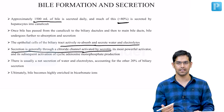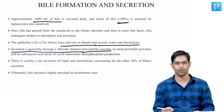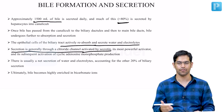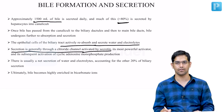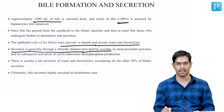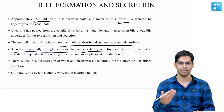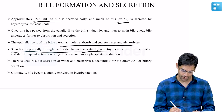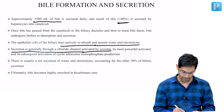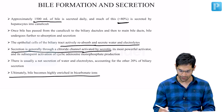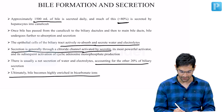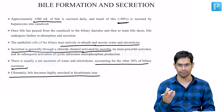Whenever chyme reaches the duodenum, secretin is activated and causes a further increase in secretion of water and electrolytes through the biliary canaliculi, changing the content of the bile. Ultimately, bile becomes enriched with bicarbonate ions, and this accounts for around 20 percent of biliary secretion.